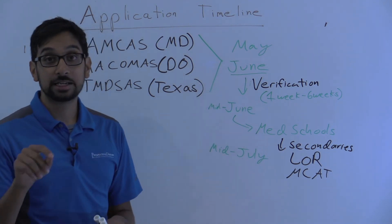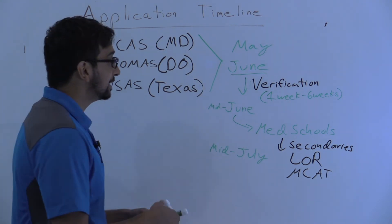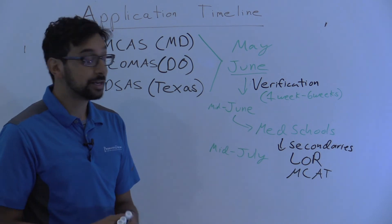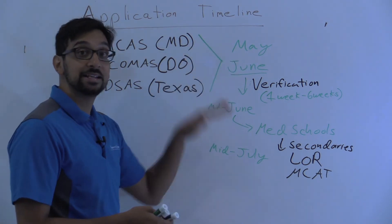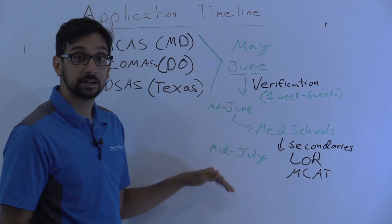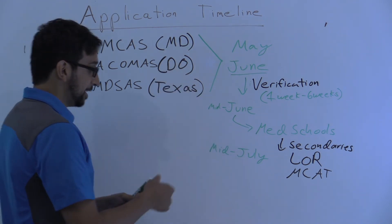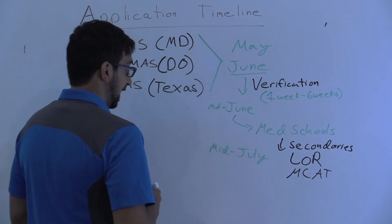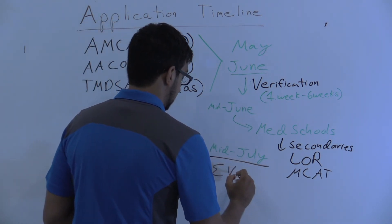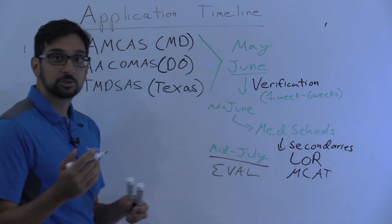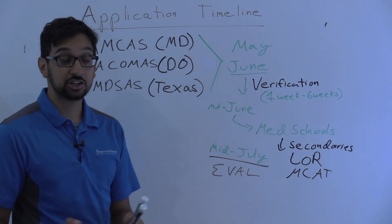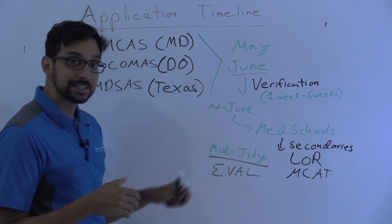If you have your MCAT score out by mid to late July, schools can evaluate you early on in the process. If you took your MCAT in August and scores didn't come out until September, your application — even if you submitted June 1st — may sit the entire time and won't actually be evaluated until then. So that's the basic timeline: the earliest a school is evaluating your application is mid to late July, and some schools may not even look at applications until August.